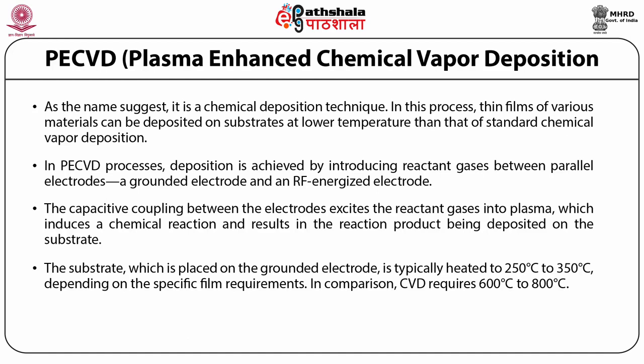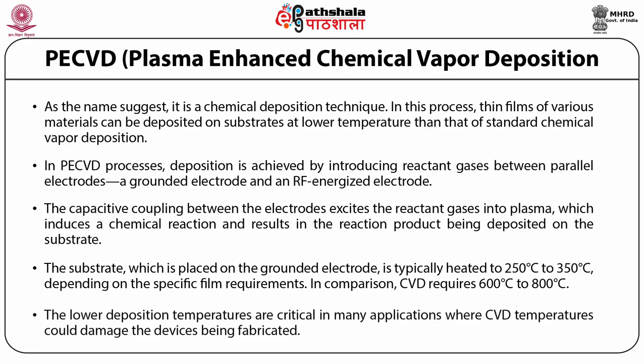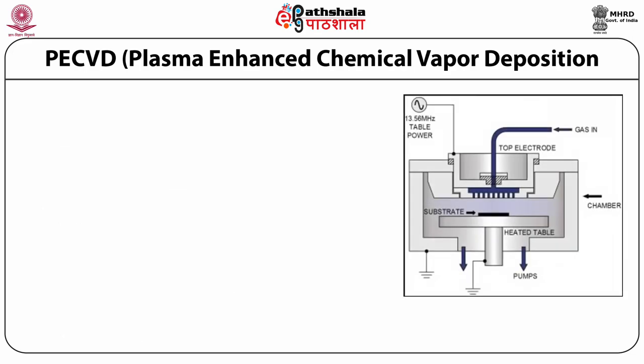In comparison, CVD technique requires 600 to 800 degrees Celsius. The lower deposition temperatures are critical in many applications where CVD temperatures could damage the devices being fabricated. The figure shows the schematic layout of the PECVD deposition system, in which we can see the gas inlet, top electrode, substrate holder, and pumps to create the vacuum.